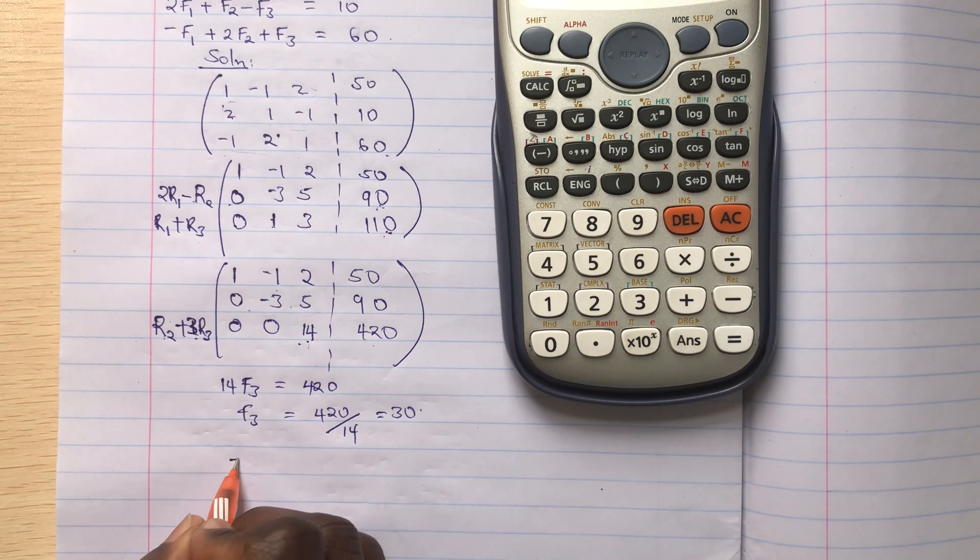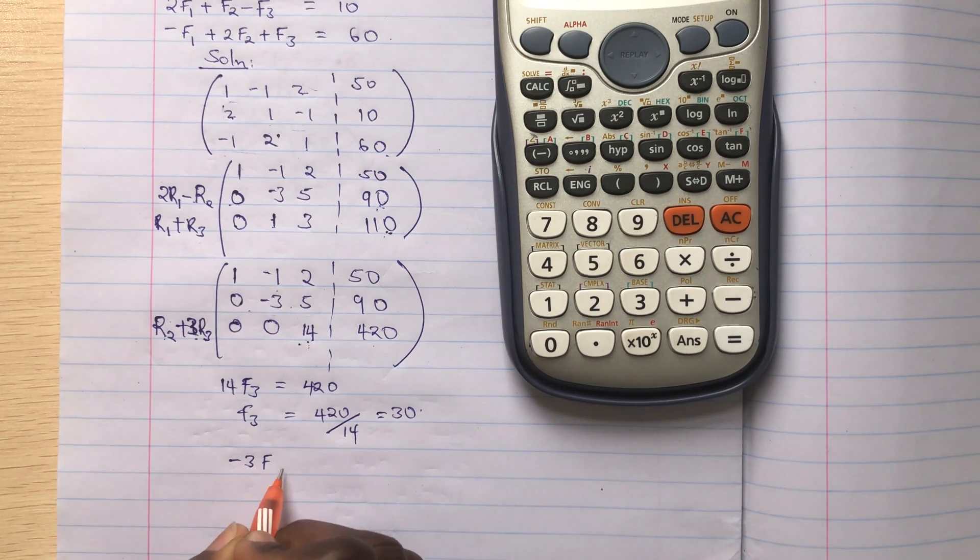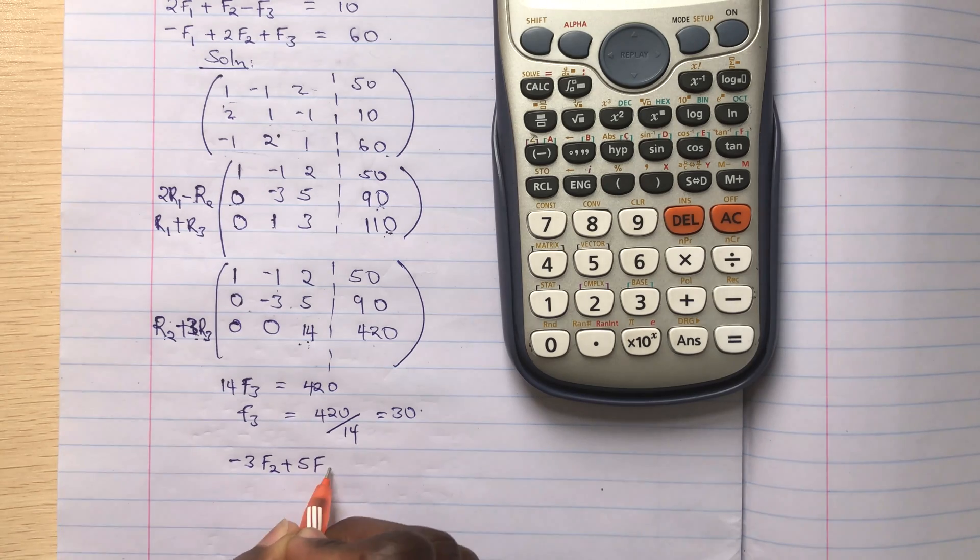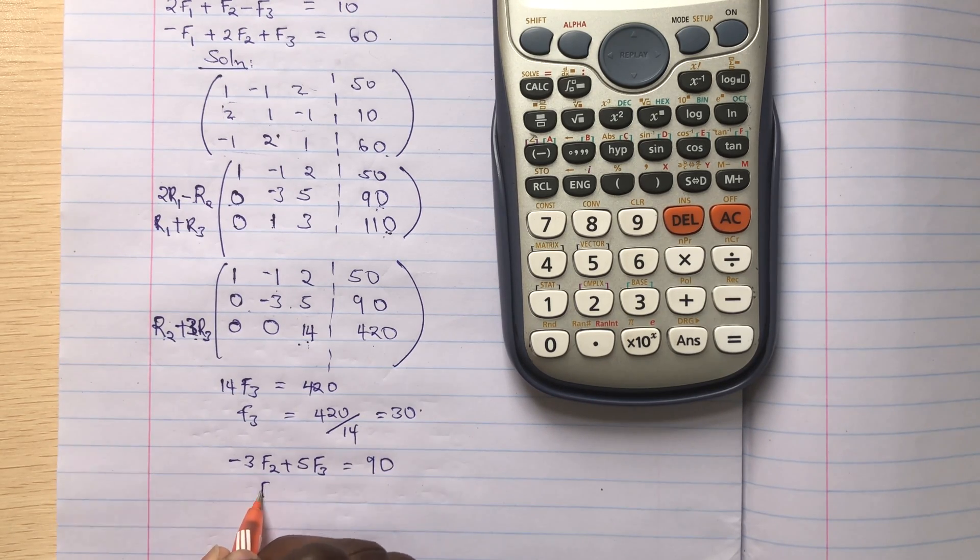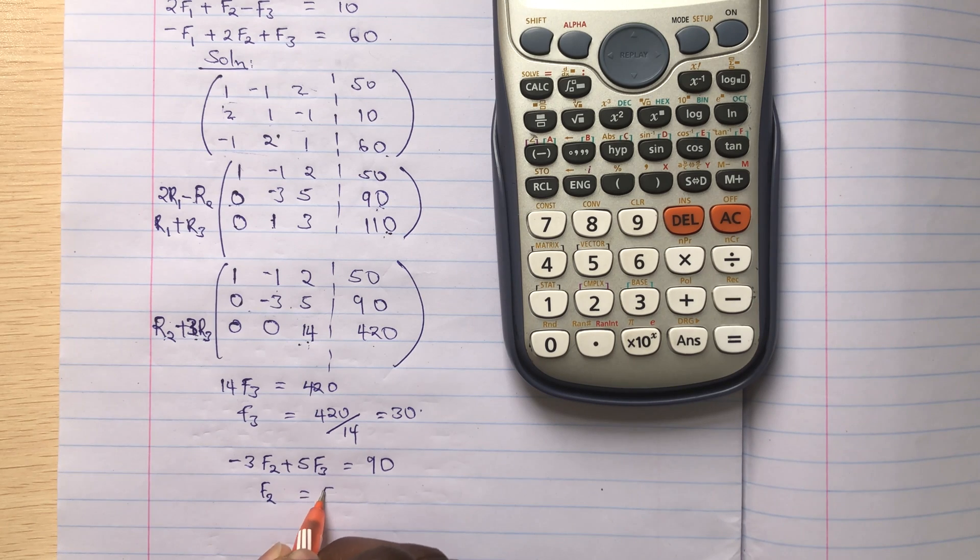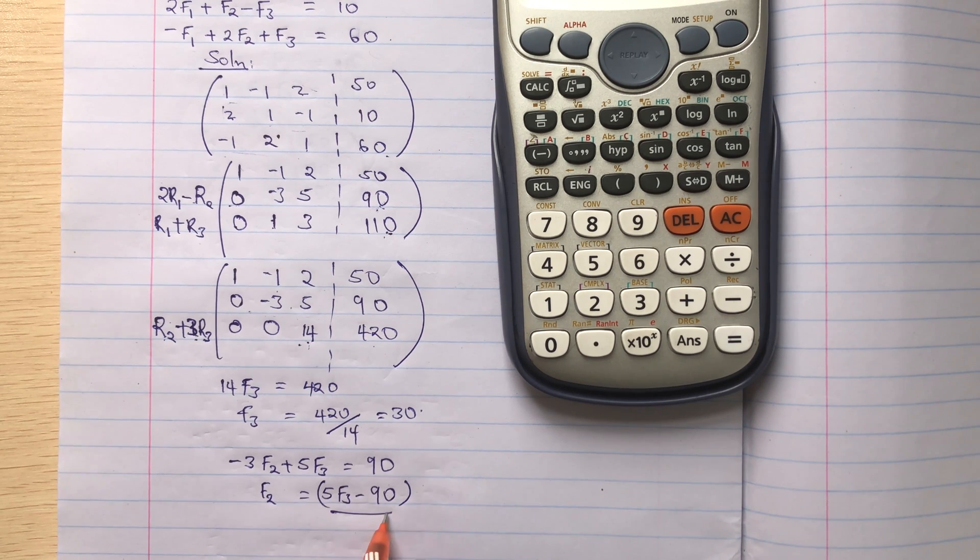Then to this negative 3 F2 plus 5 F3 equals 90. That means F2 is equal to 5 F3 minus 90, the whole thing over 3.